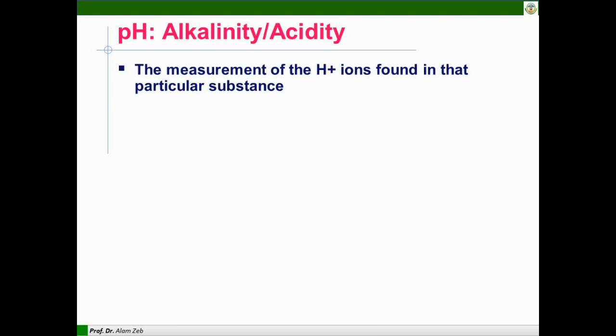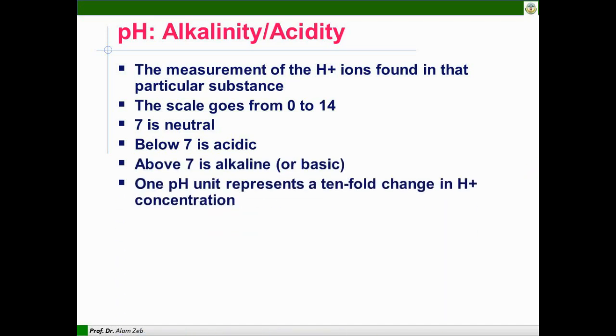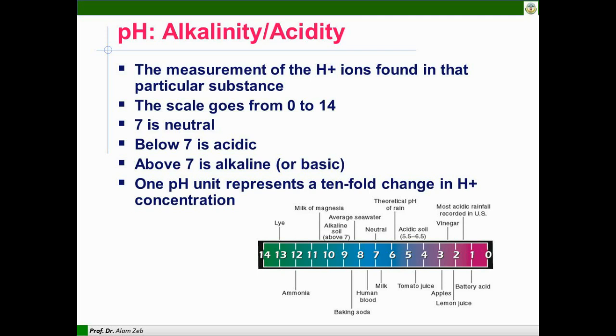pH, alkalinity, or acidity. pH is the measurement of hydrogen ion concentration found in that particular substance. The scale goes from 0 to 14. 7 is neutral. Below 7 is acidic. Above 7 is alkaline or basic. One pH unit represents a ten-fold change in the proton ion concentration.